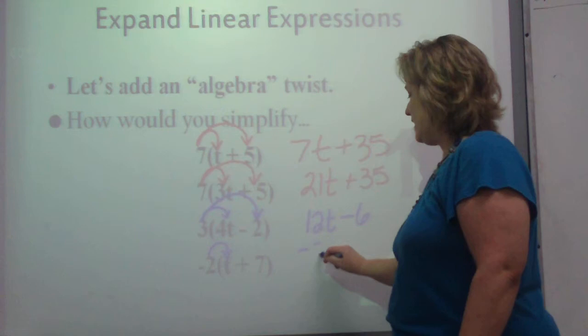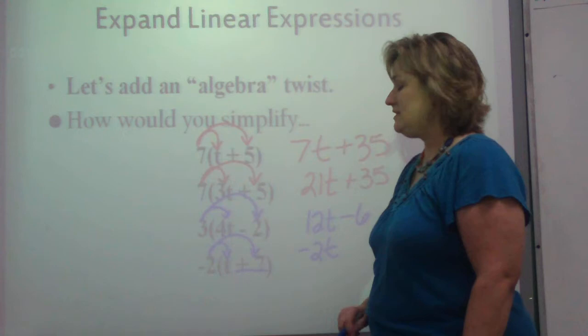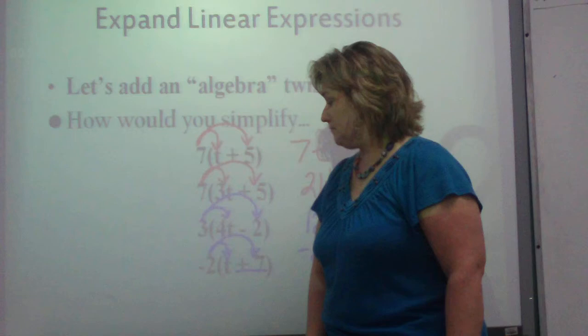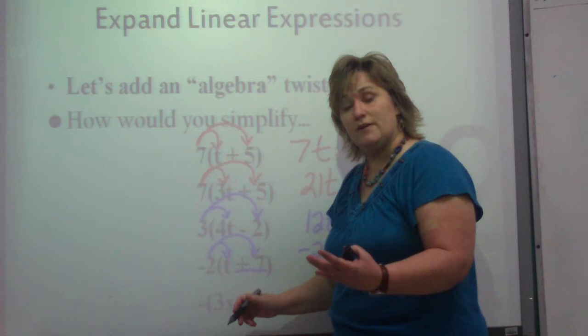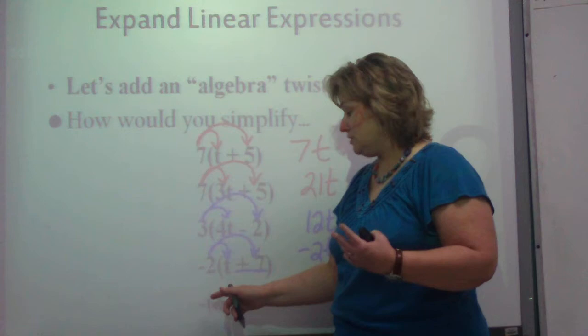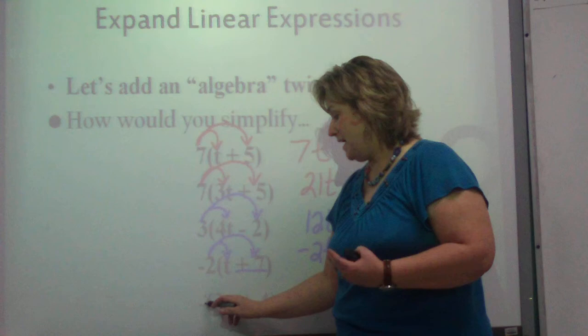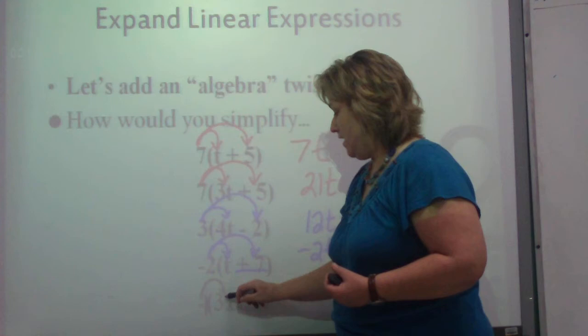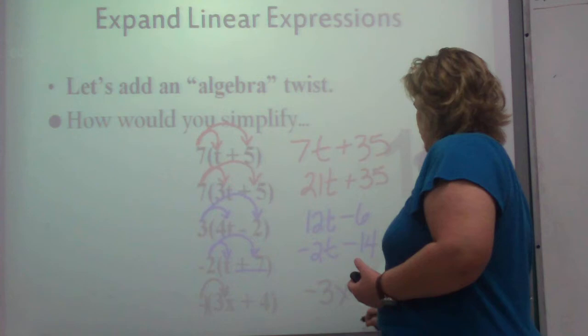The next one is negative 2 times t, which is negative 2t. Negative 2 times positive 7 is negative 14. And the last one, when you have a subtraction outside of the parentheses, do you remember what that means? It really, to be honest with you, it just means opposite. So what is the opposite of what's inside of here? It also means you're taking everything times negative 1. However you would like to view it is fine with me. I don't care. That would be negative 3x and the opposite of 4 is negative 4.